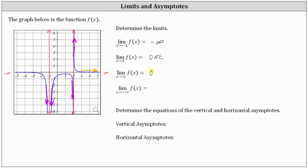Next, we have the limit of f of x as x approaches negative infinity. So now we're moving left along the graph as x approaches negative infinity. And once again, we can see the function values approach zero, which is the value of the limit. Remember, the limits at infinity indicate the end behavior of the function, which also indicate horizontal asymptotes.